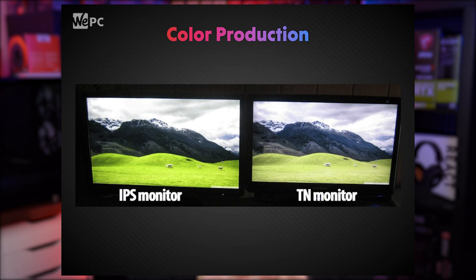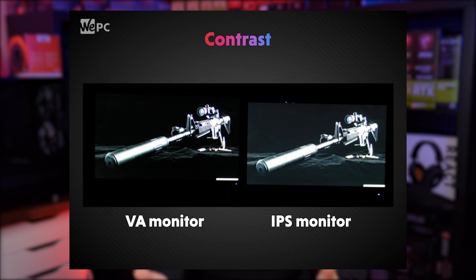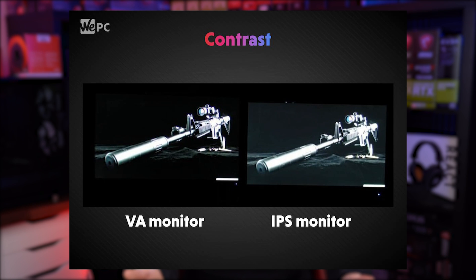TN monitors just can't compete with IPS and VA monitors when it comes to the quality of colour reproduced. IPS and VA monitors have better control and precision that allows them to deliver a more accurate colour than TN monitors. In terms of contrast, TN monitors show better blacks compared to IPS monitors, however VA monitors double the capabilities of what TN monitors can do, making them the best for watching movies since they show better colour contrast on darker scenes. TN monitors are among the most affordable, while IPS and VA monitors tend to be a little more expensive with similar performance specs, better viewing angles and vibrant colour reproduction.